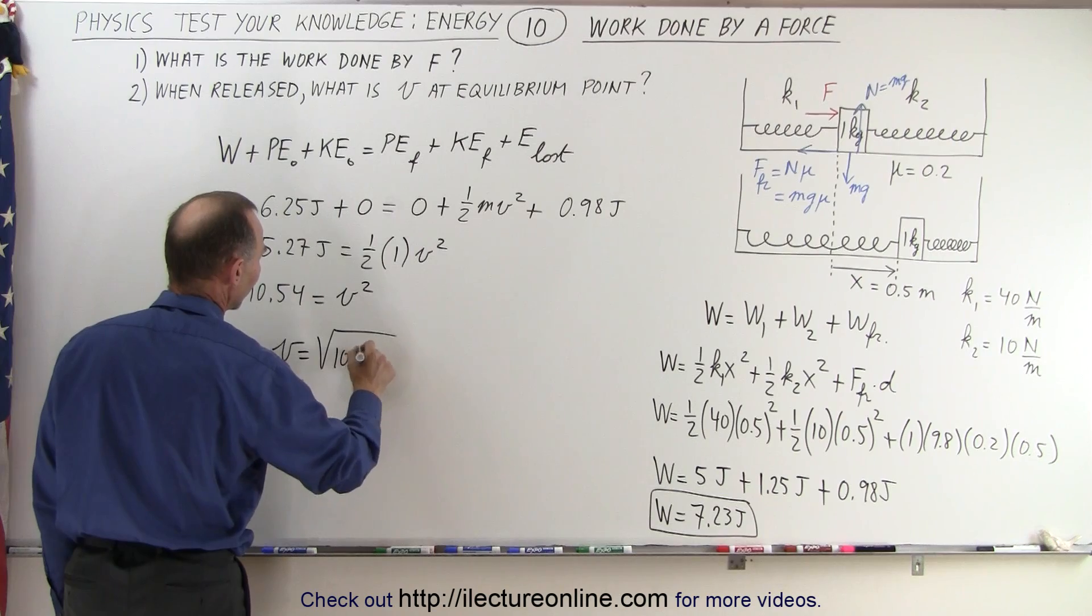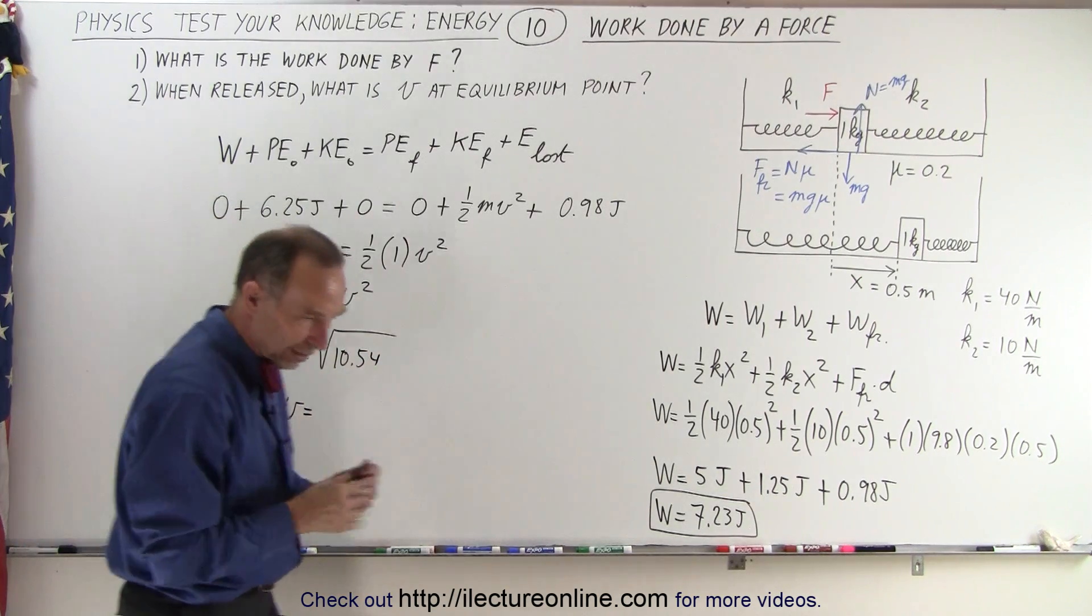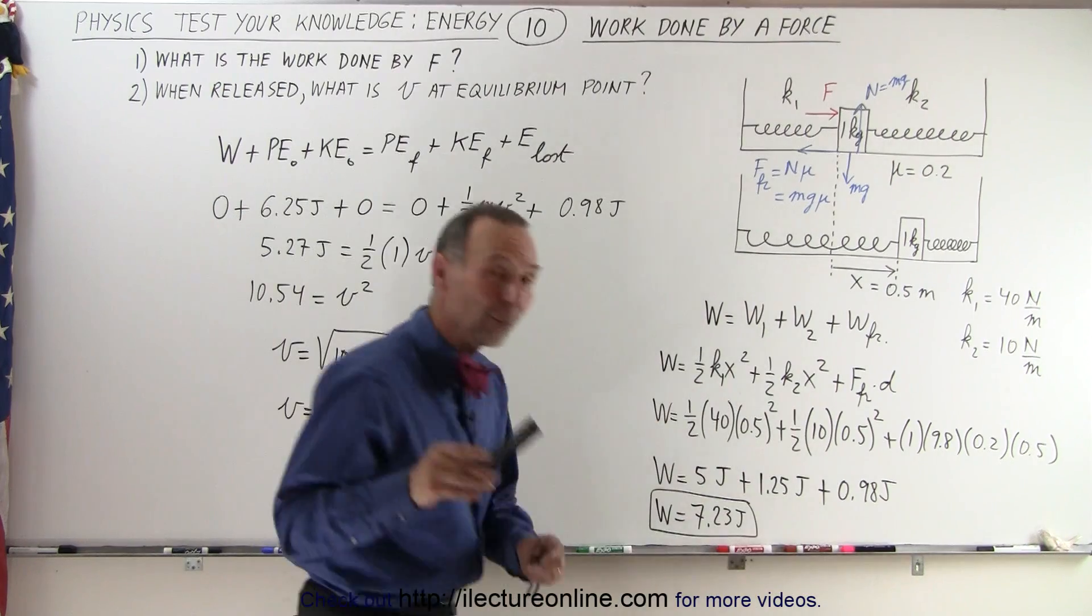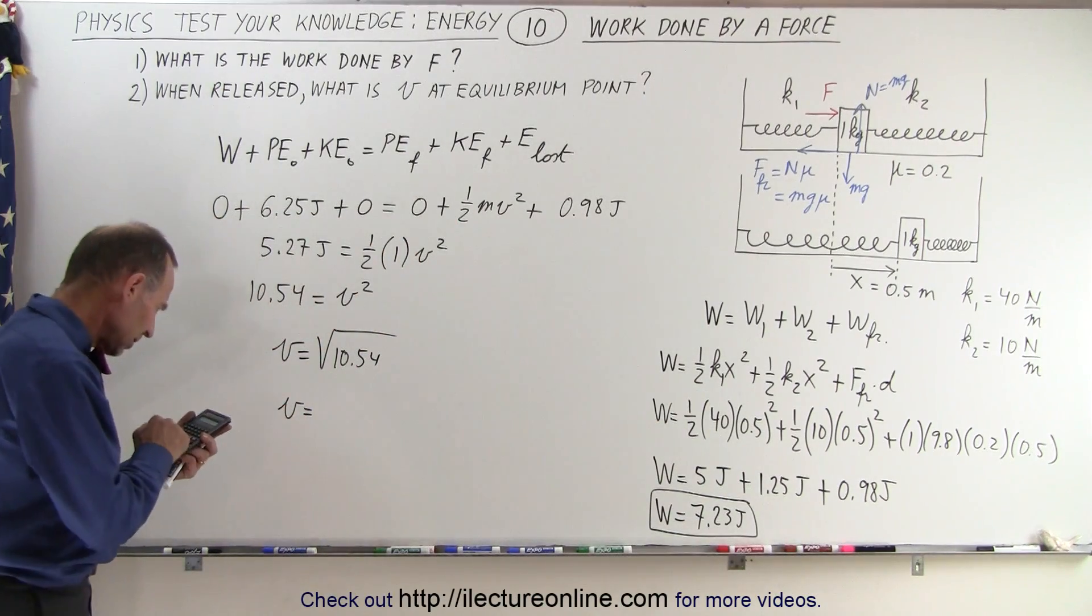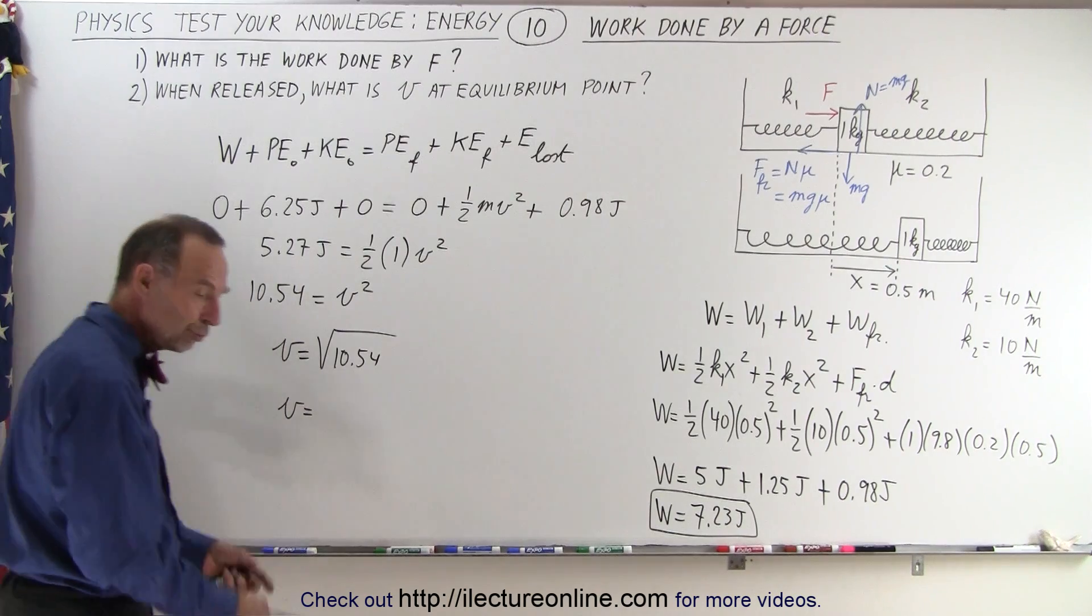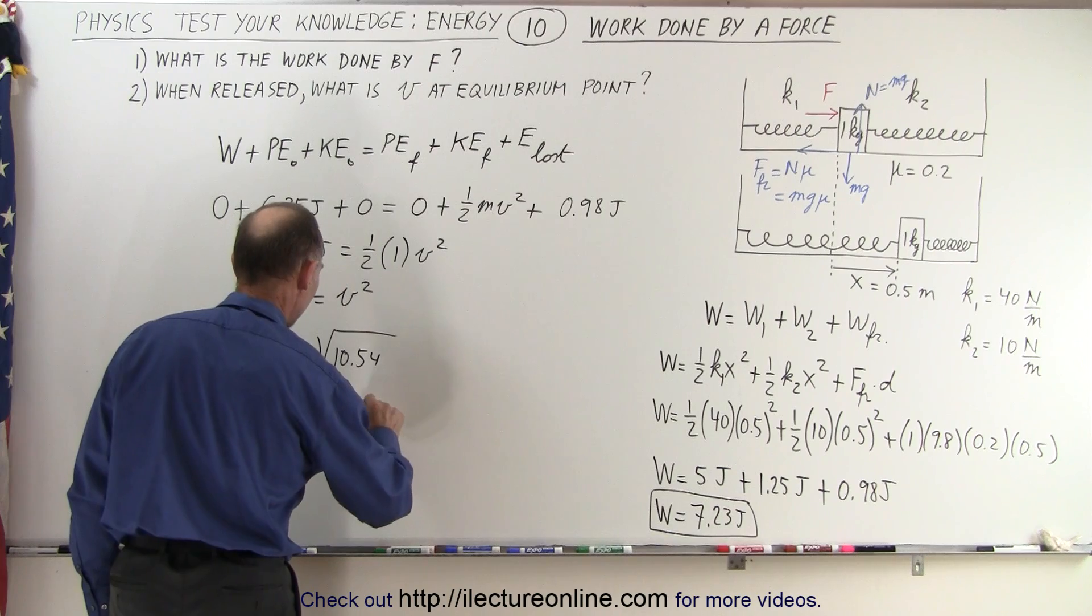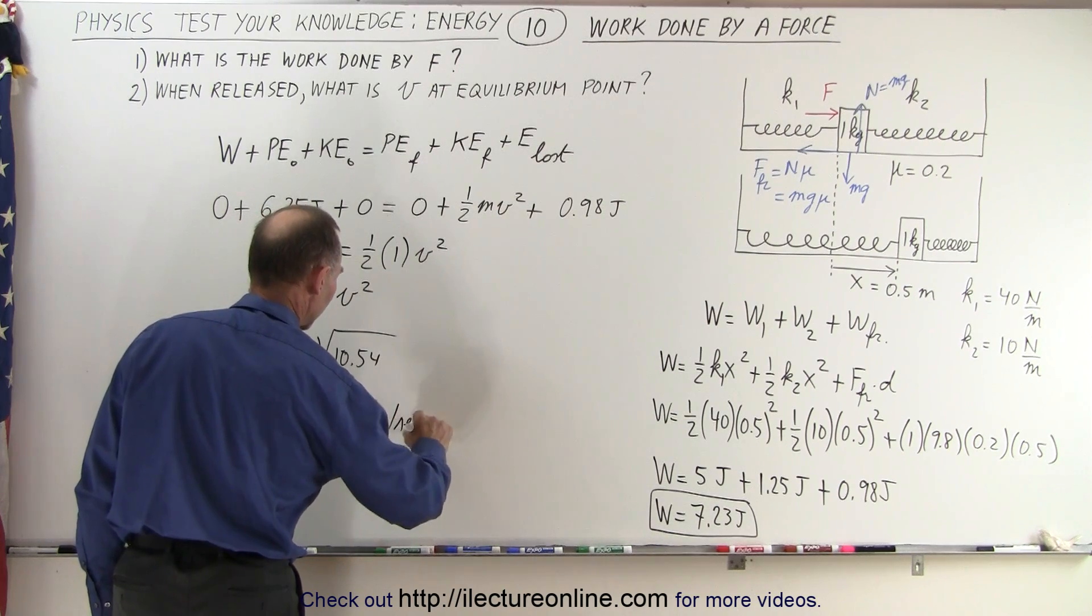So twice this, that would be 10.54 is equal to v squared, or v is equal to the square root of 10.54. So the velocity when the block gets back to the equilibrium point will be equal to—10.54 take the square root of that—which is 3.25 meters per second.